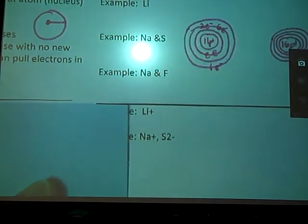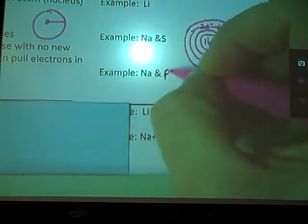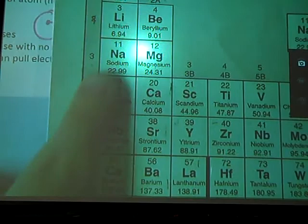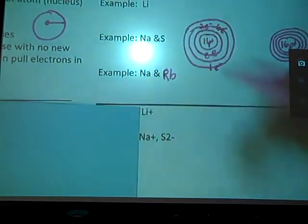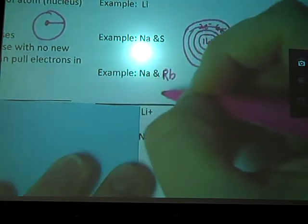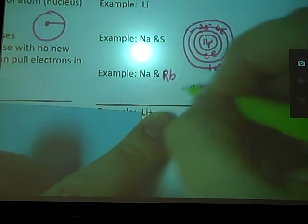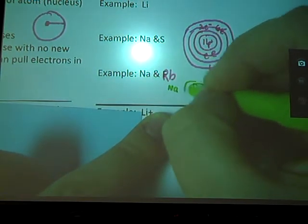Example for this one is sodium versus, fluorine is a bad example. Let's do sodium and rubidium. I don't want to do fluorine. So sodium, rubidium, same family. Sodium has an 11 proton magnet. I should do this in a different color because these are going to overlap, for which I apologize. An 11 proton magnet in sodium. Three rings on my sodium.